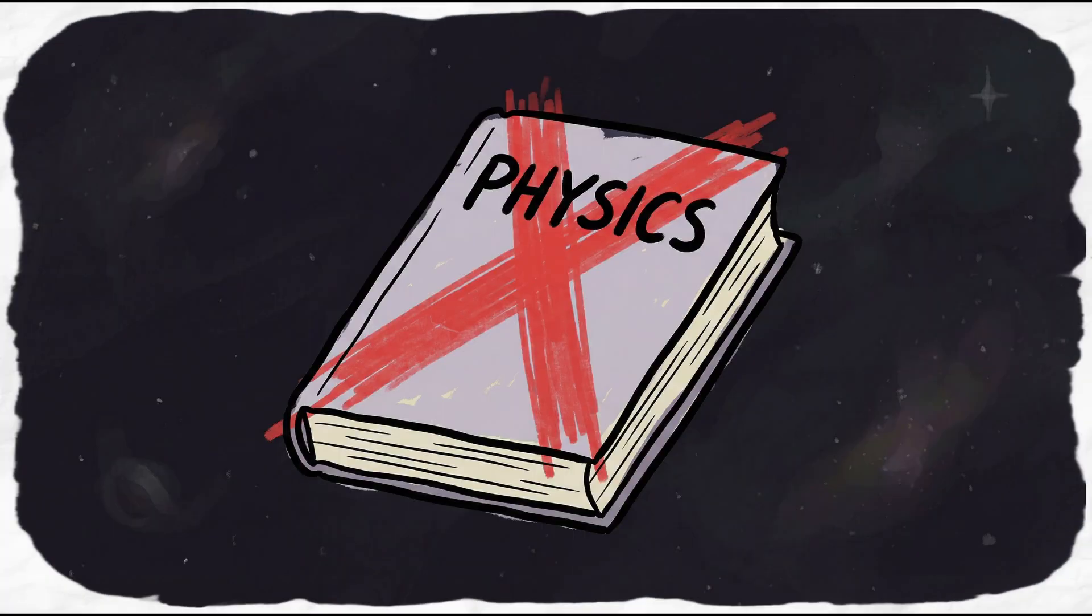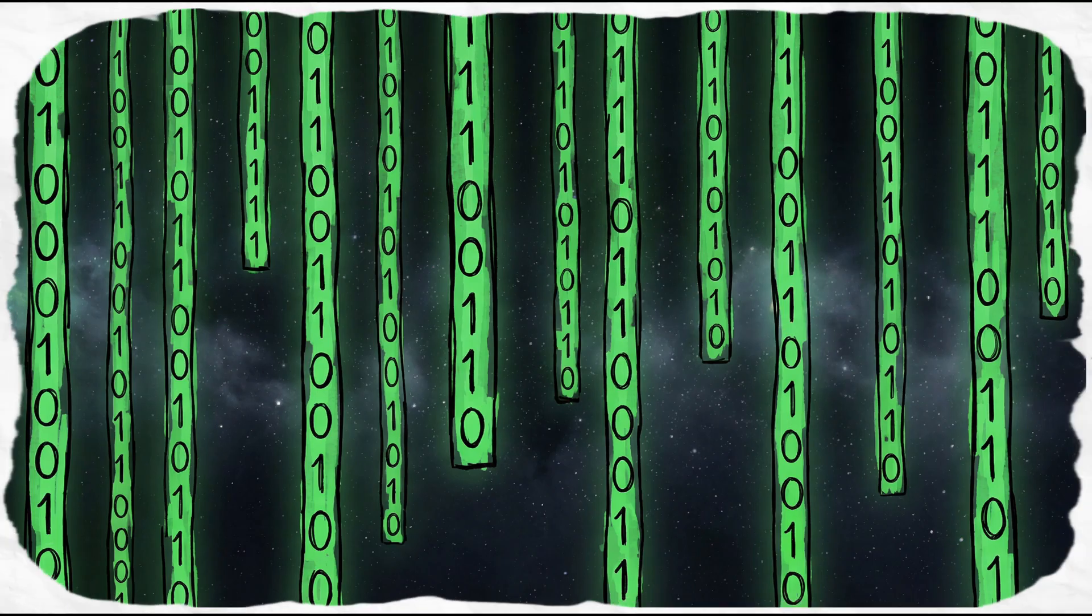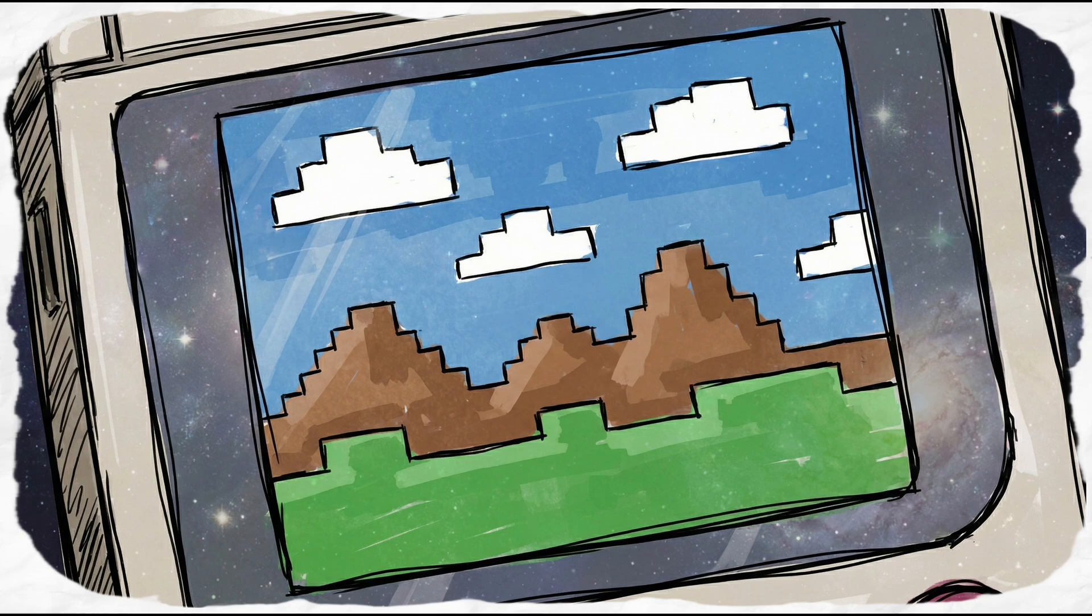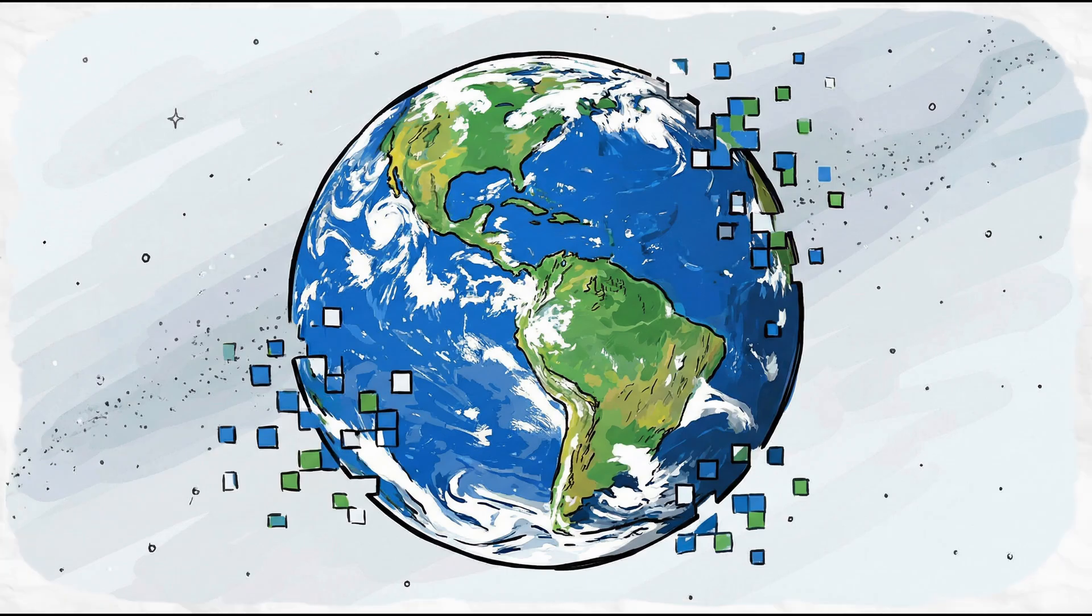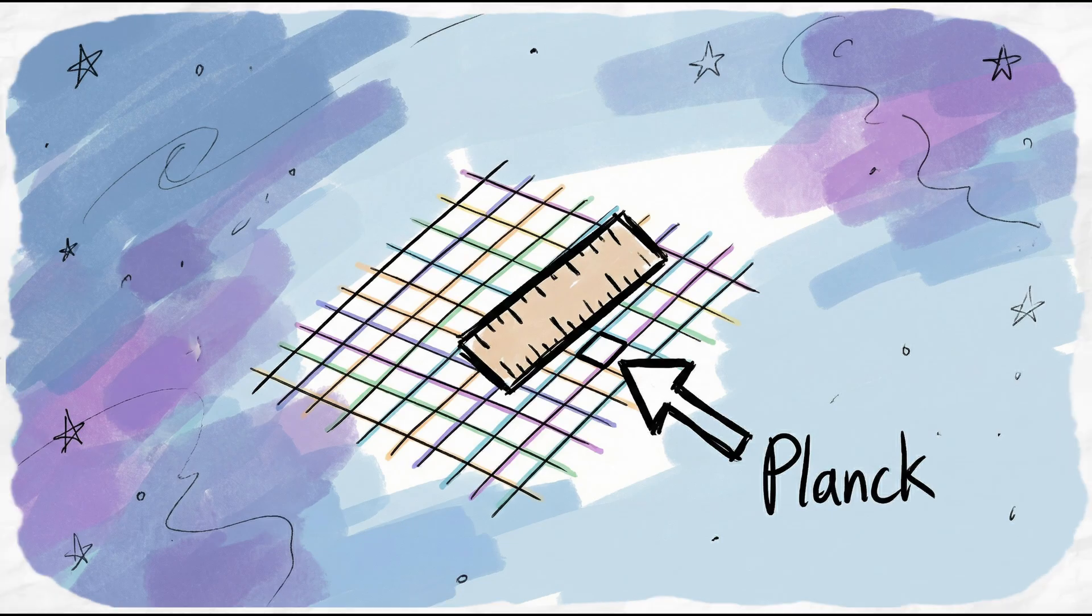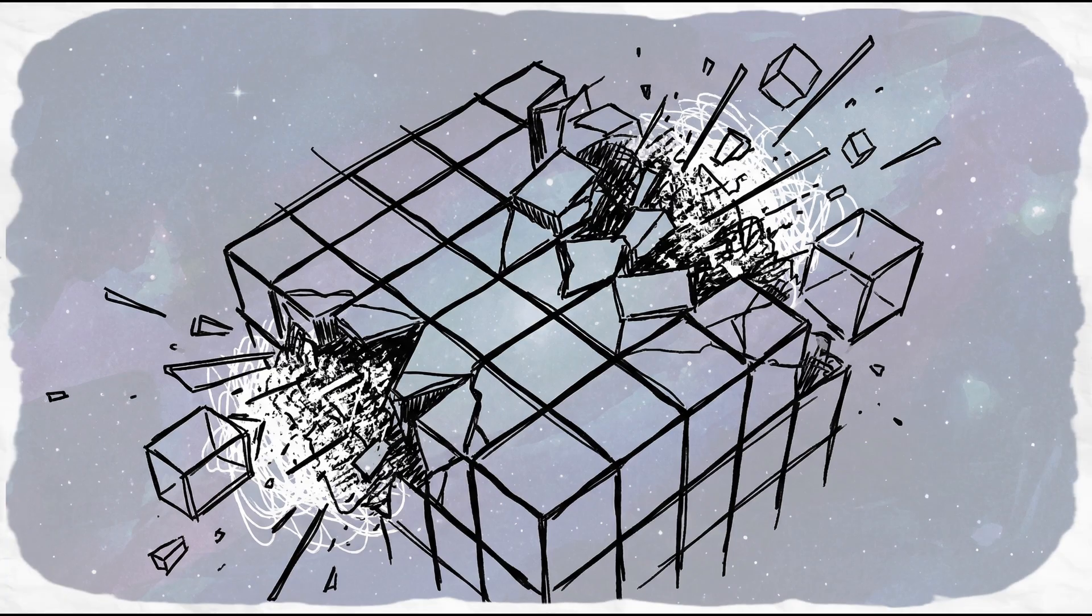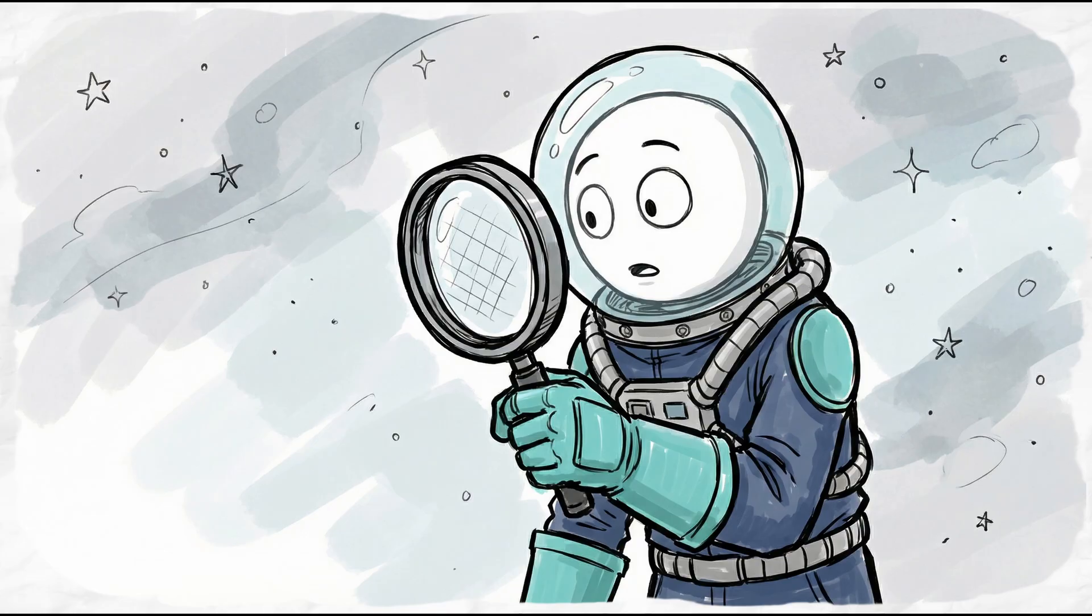Finally, let's stop talking about physics and talk about information. Zoom in on a video game. Eventually, you see pixels. Our universe has a similar limit called the Planck length. Below this size, geometry breaks. Is this the pixel density of our universe?